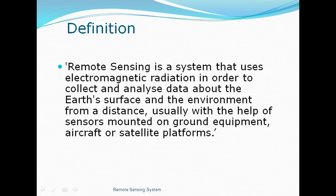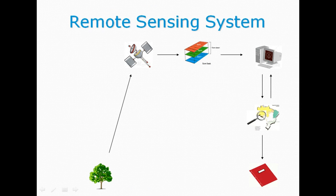A remote sensing system uses electromagnetic radiation in order to collect and analyze data about the Earth's surface and the environment from a distance, usually with the help of sensors mounted on ground equipment, aircraft, or satellite platforms. This little sketch here will help us understand how the whole information system works. It is important to specify that we have not displayed the sun here because we are dealing only with the information system itself.